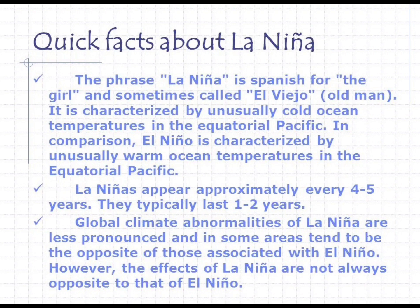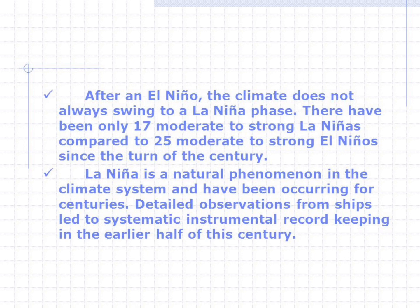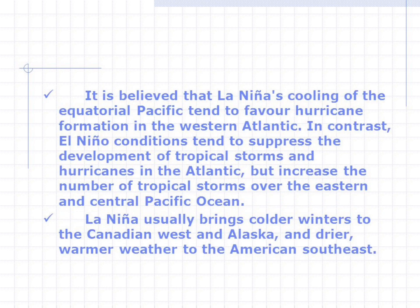However, the effects of La Niña are not always opposite to those of El Niño. After an El Niño, the climate does not always swing to a La Niña phase. There have been only 17 moderate to strong La Niñas compared to 25 moderate to strong El Niños since the turn of the century. La Niña is a natural phenomenon that has occurred for centuries. It is believed that La Niña's cooling of the equatorial Pacific tends to favor hurricane formation in the western Atlantic.